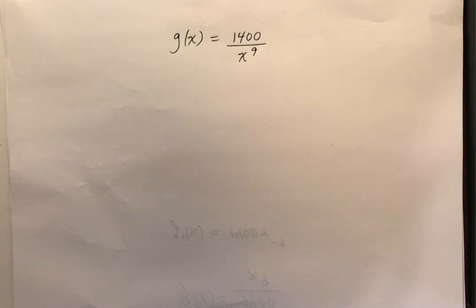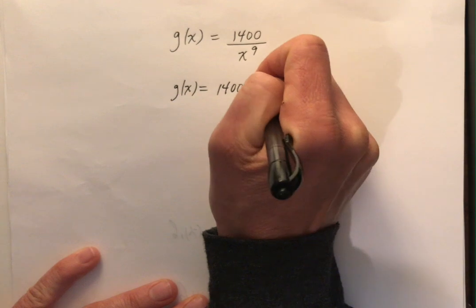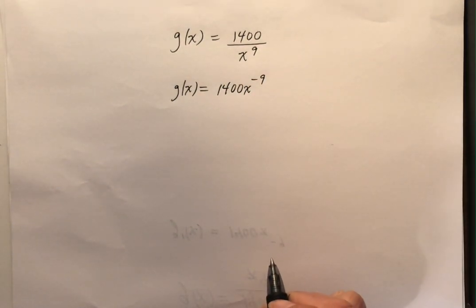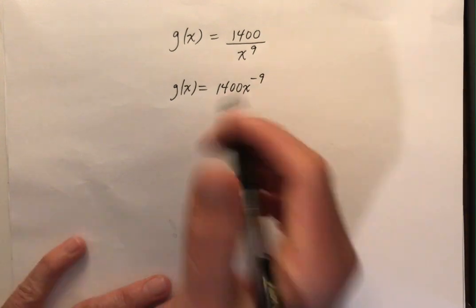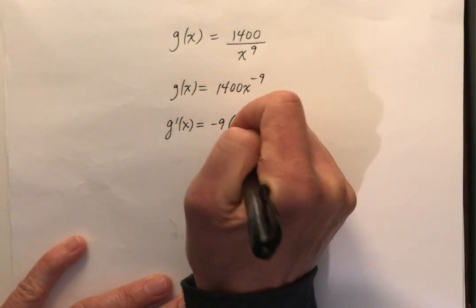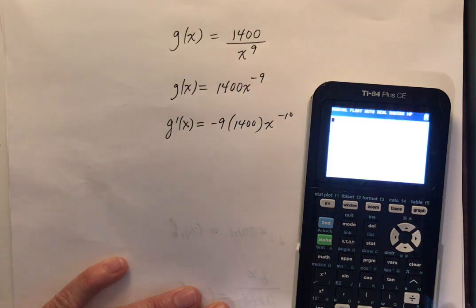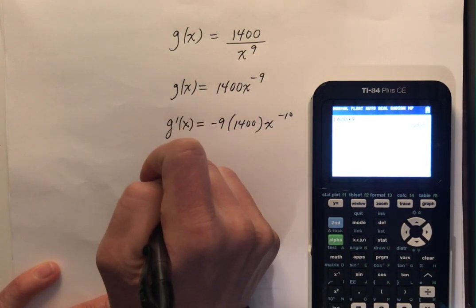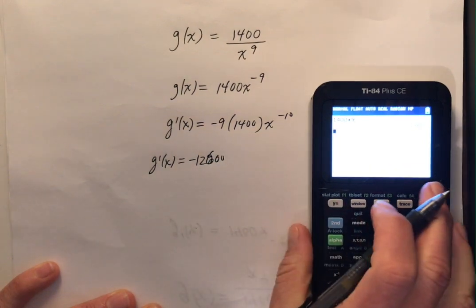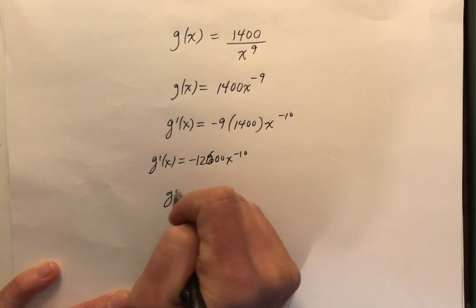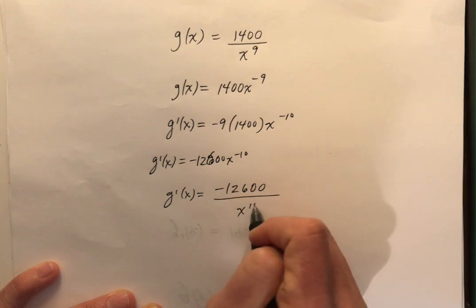So let's start with g of x is 1400 over x to the ninth. And surprisingly to no one, I can rewrite that as 1400 x to the negative nine. Now to take the derivative, that negative nine is just going to come down. I'm going to do negative nine times 1400 x to the negative ten. So g prime of x is negative 12,600 x to the negative ten, which I can clean this up if I don't feel like leaving negative exponents. Negative 12,600 all over x to the tenth power.